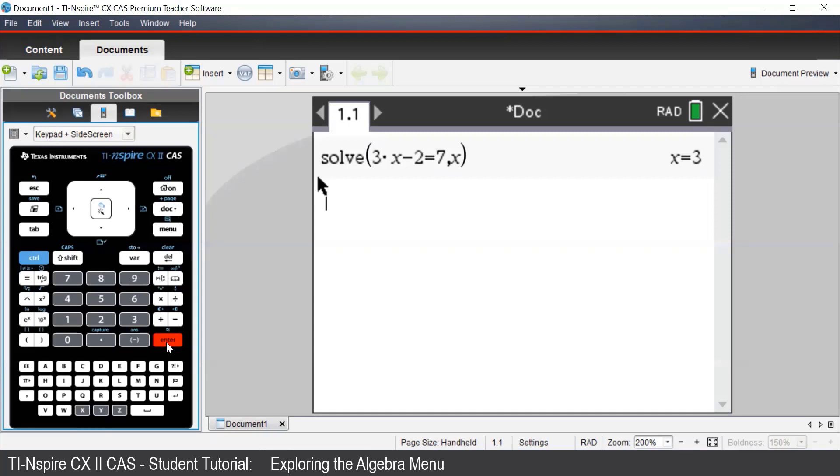We can also use the solve command to solve inequalities. This time, we will solve 3x minus 2 less than 7.